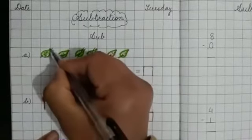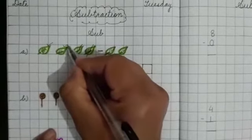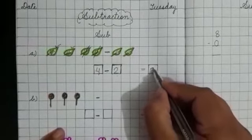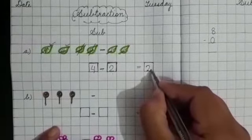How many are left? Count it. 1, 2. So what will be the answer? 2. Okay.